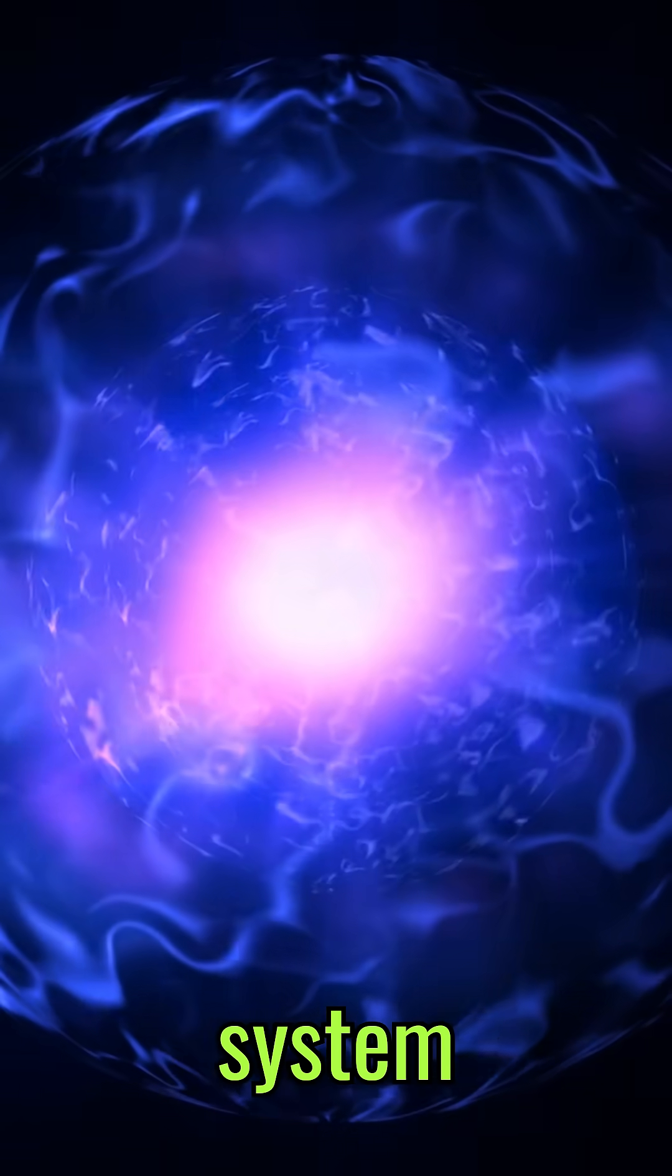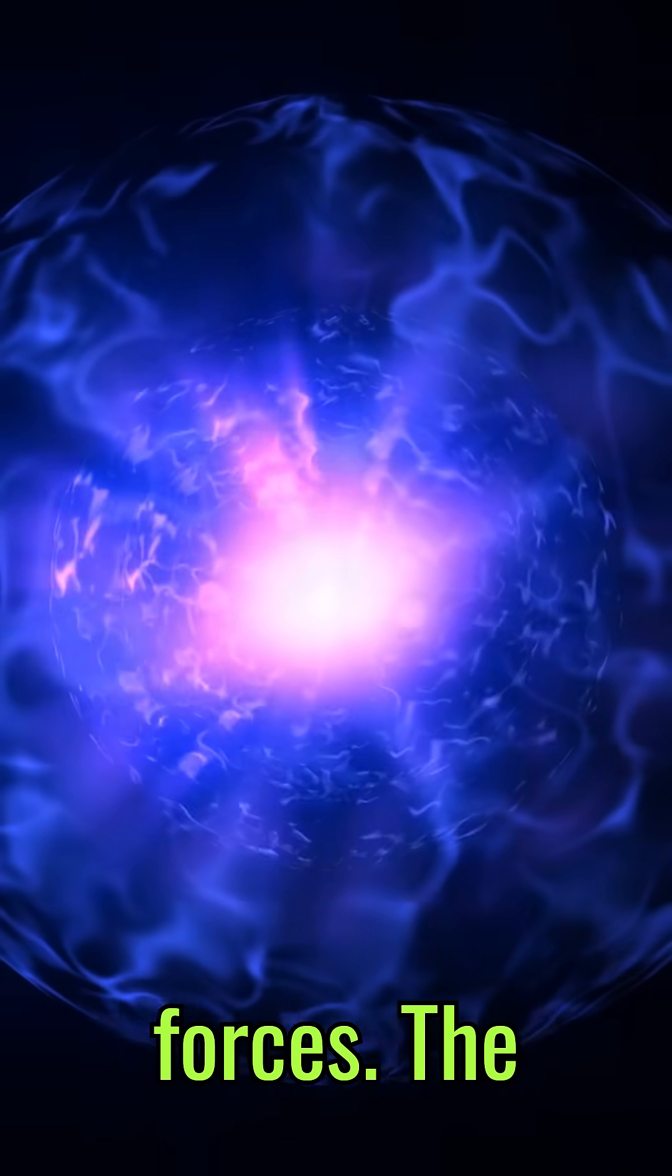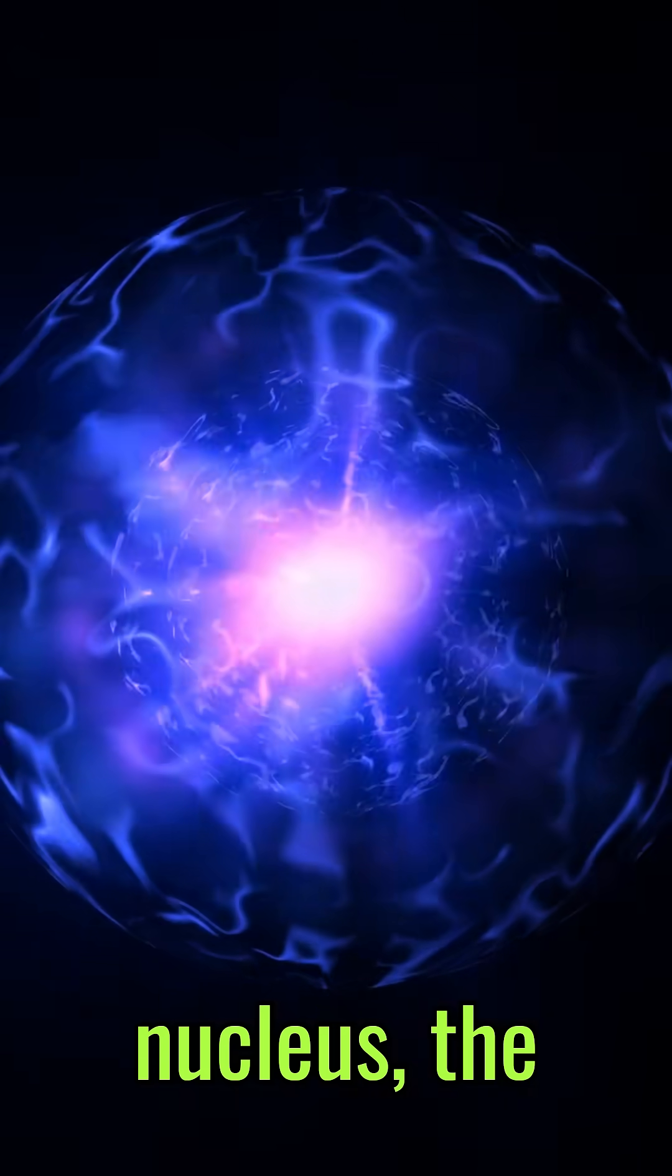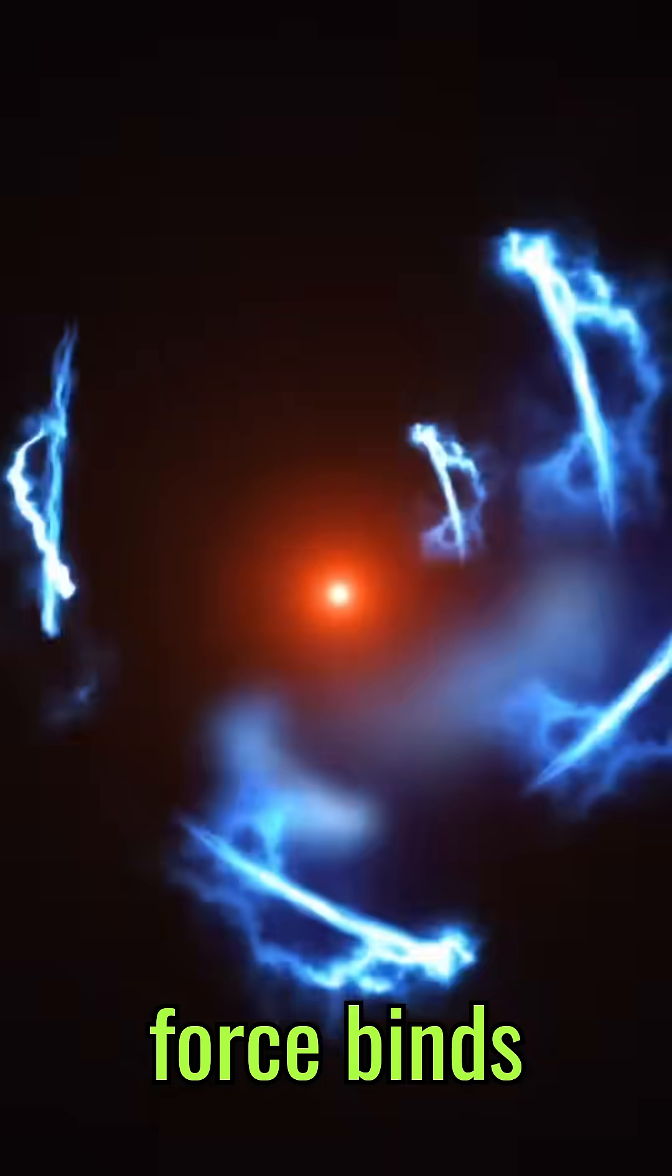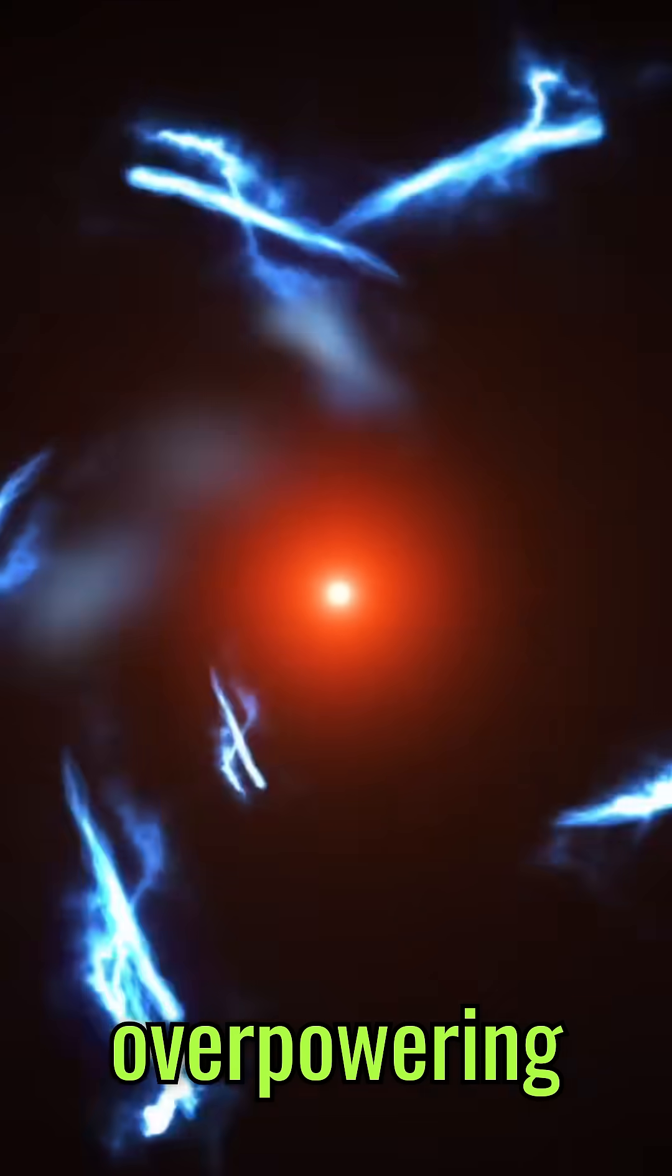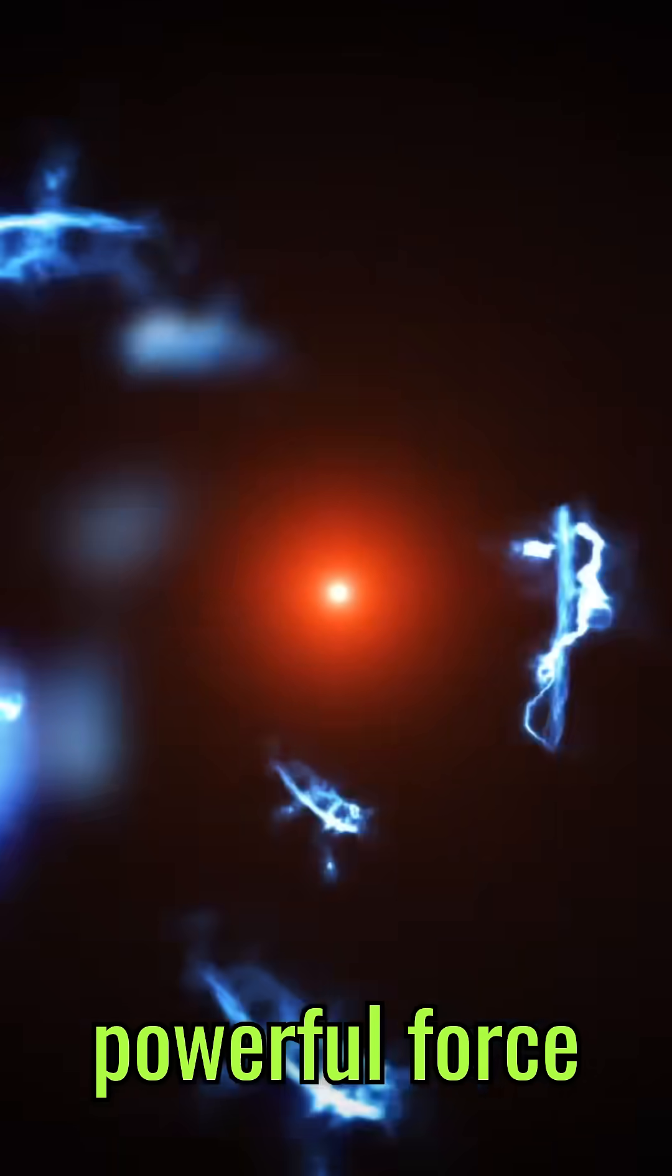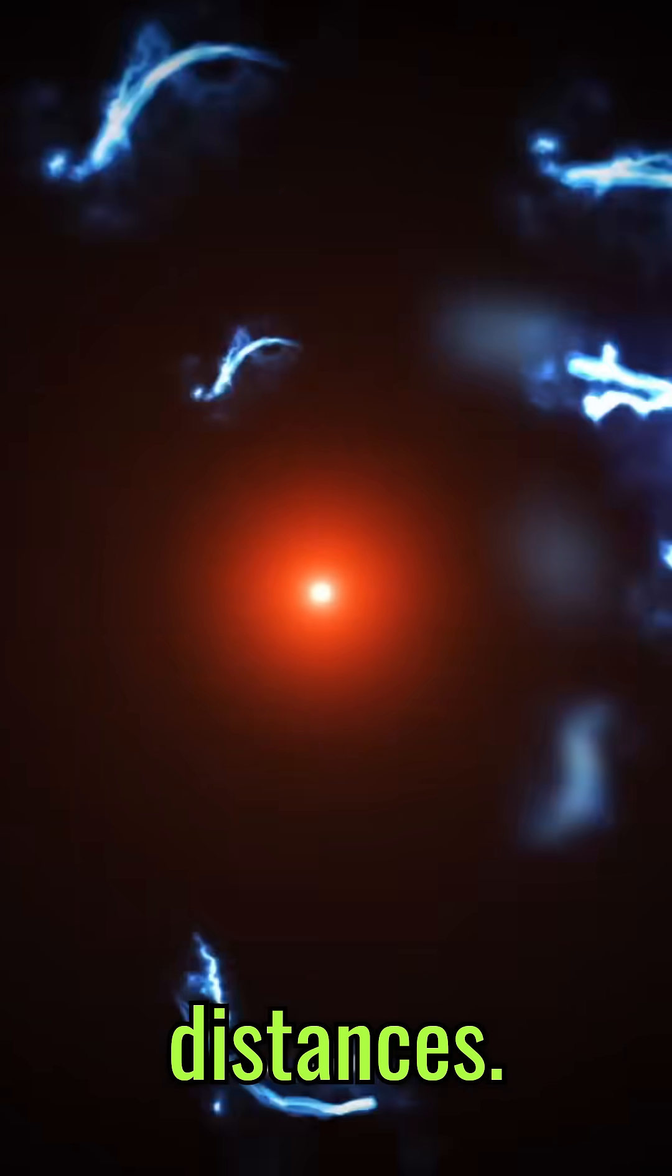What holds this intricate system together? Fundamental forces. The electromagnetic force keeps negatively charged electrons bound to the positively charged nucleus. Within the nucleus, the strong nuclear force binds protons and neutrons together, overpowering the repulsion between positively charged protons. This is the most powerful force in the universe, but it acts only at very short distances.